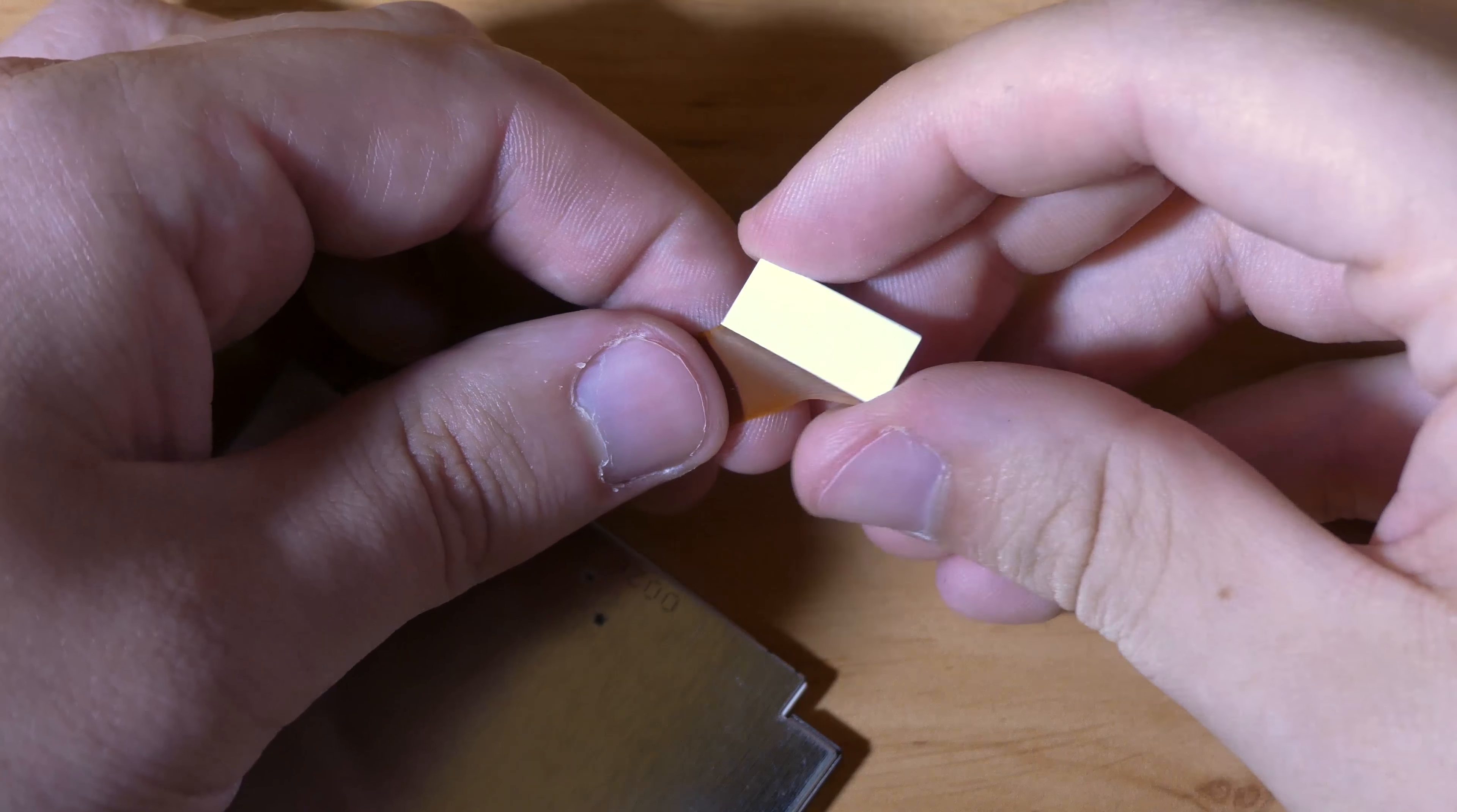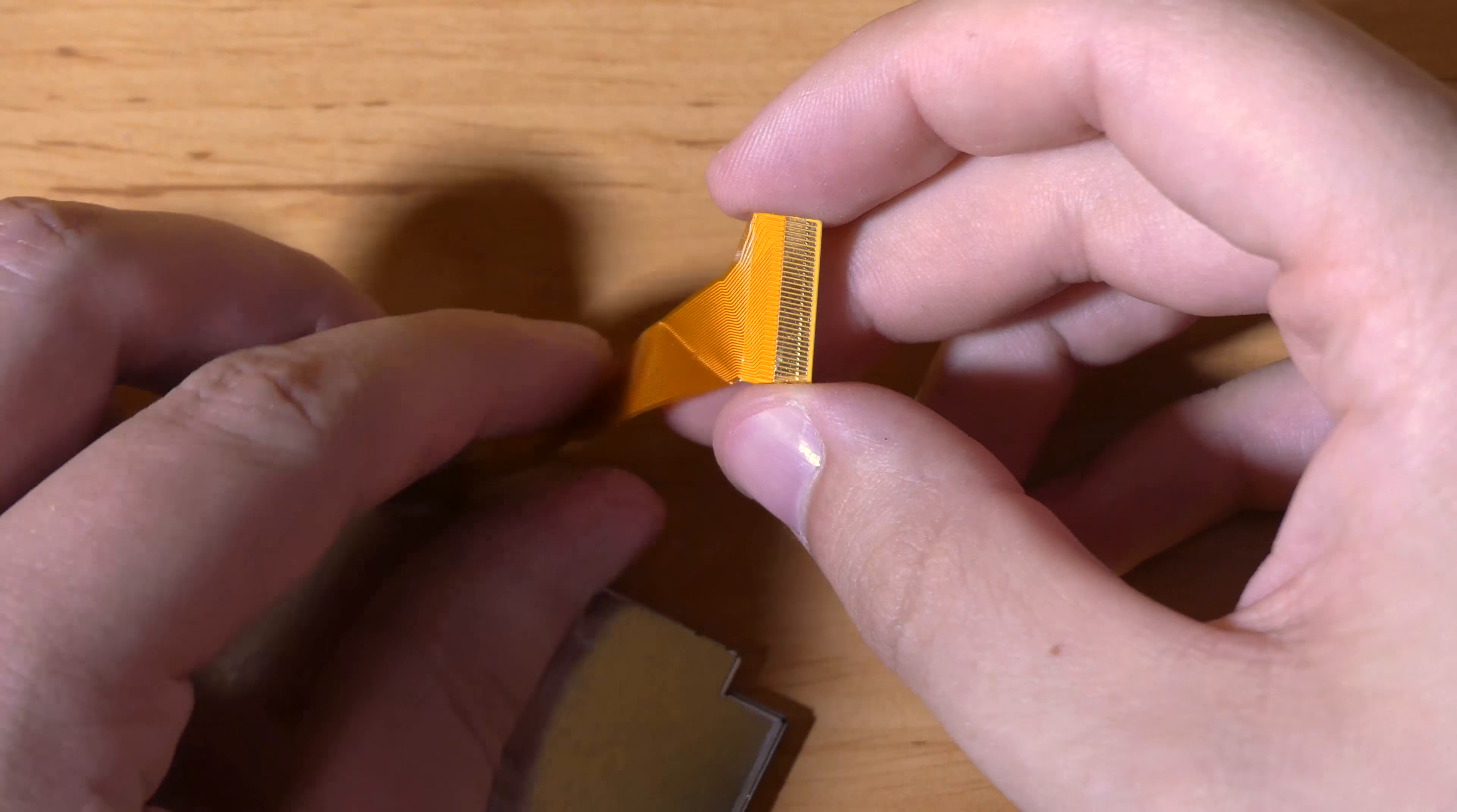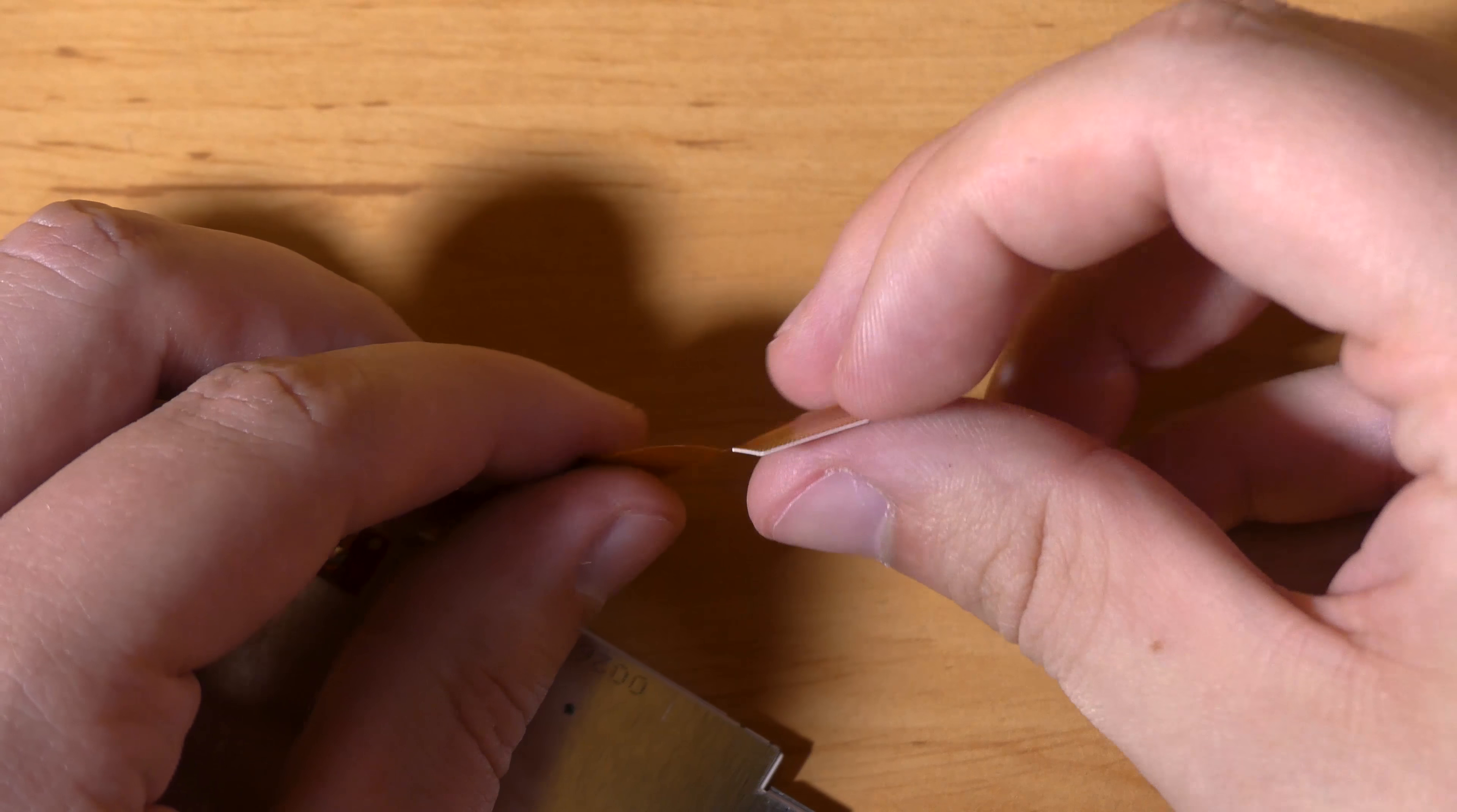While there are a lot of GBA backlight mod tutorials out there, it was difficult for me to find one that covers how to properly install Chinese aftermarket ones. You can tell by the white tab on the ribbon cable as opposed to the original's brown tab.